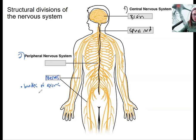Nerves are bundles of axons. And then specifically in the PNS, that's where we are, right?